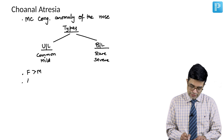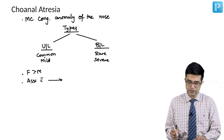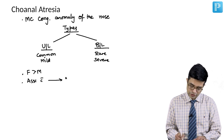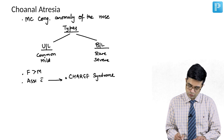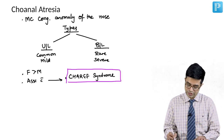Choanal atresia is commonly associated with certain syndromes. The most common syndromic association is CHARGE syndrome, which is a very frequent association among all the syndromes. If a question asks for the most common syndromic association, the answer is CHARGE syndrome.